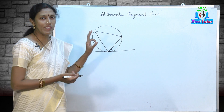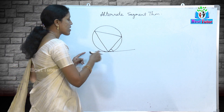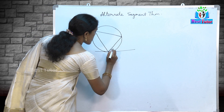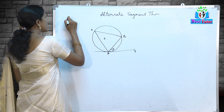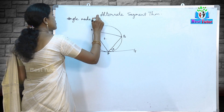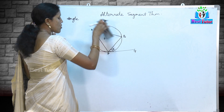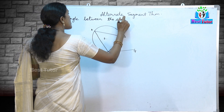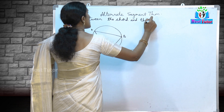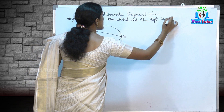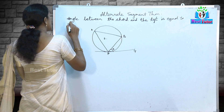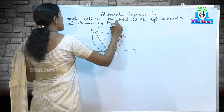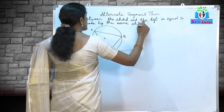This is the statement of the theorem, and the proof is going to be very simple. A circle, a tangent, and a chord through the point of contact — the angle between the chord and the tangent, I have labeled as A. What we need to prove is that the angle between the chord and the tangent is equal to the angle made by the same chord in the alternate segment.